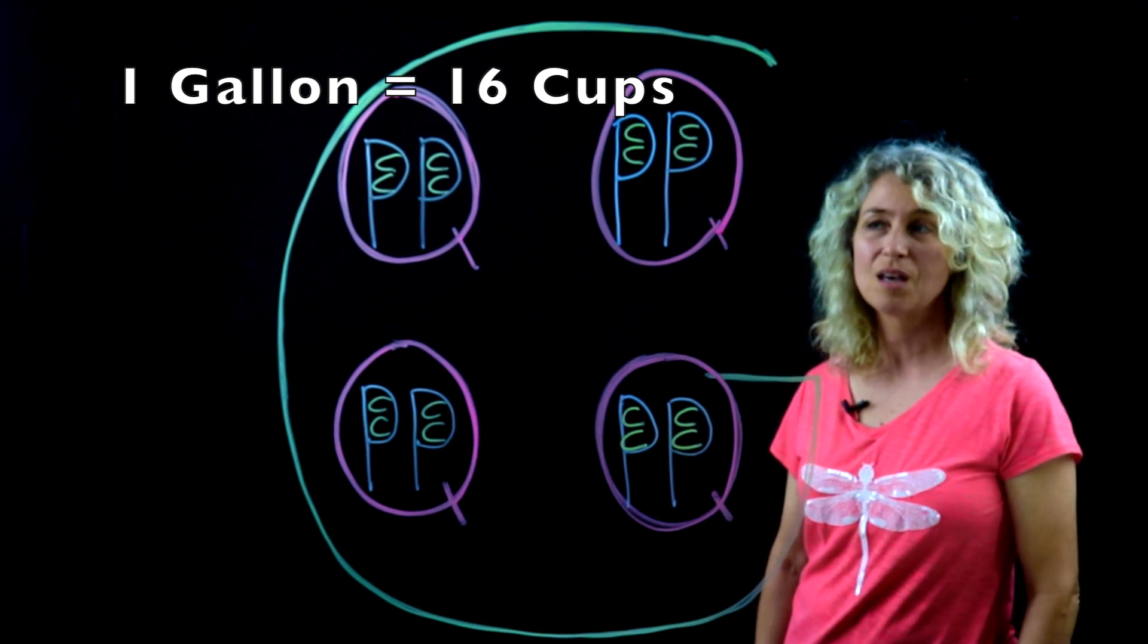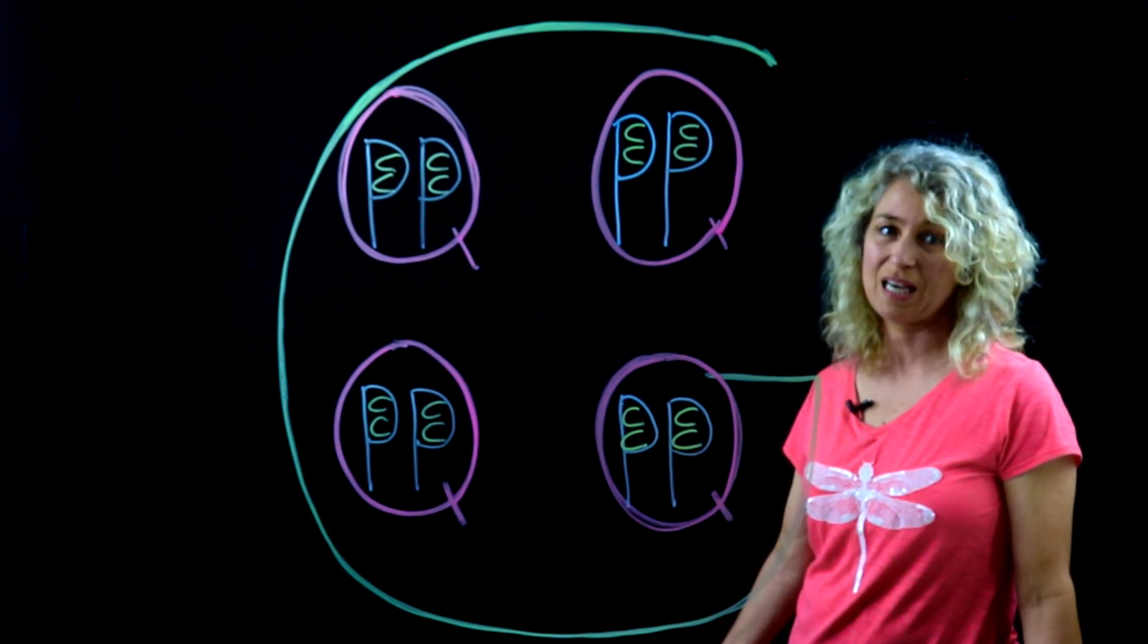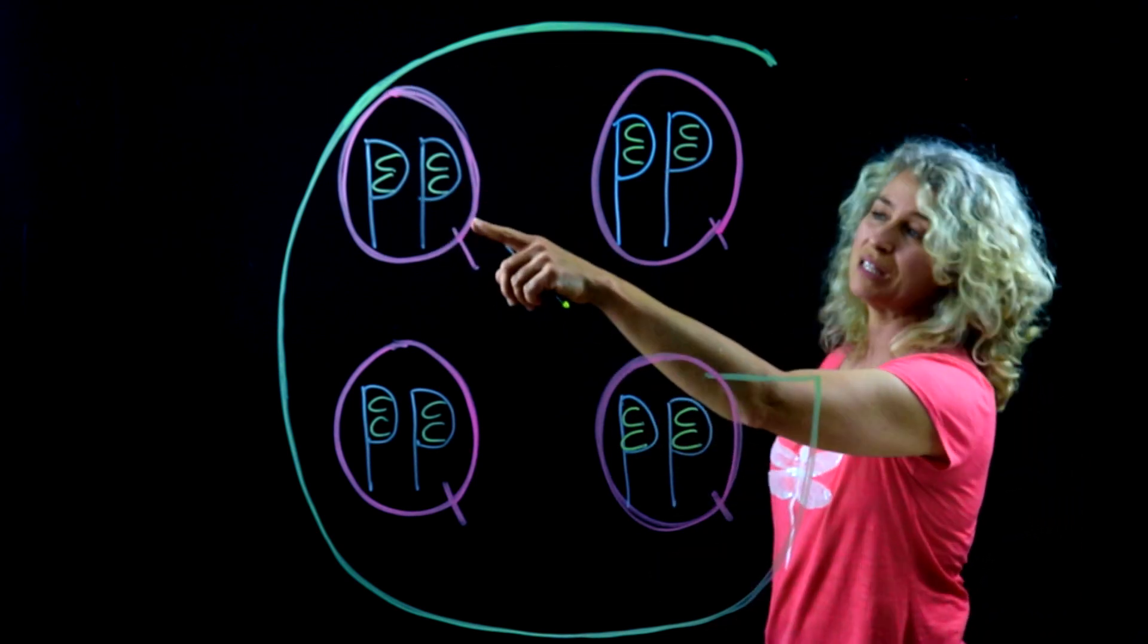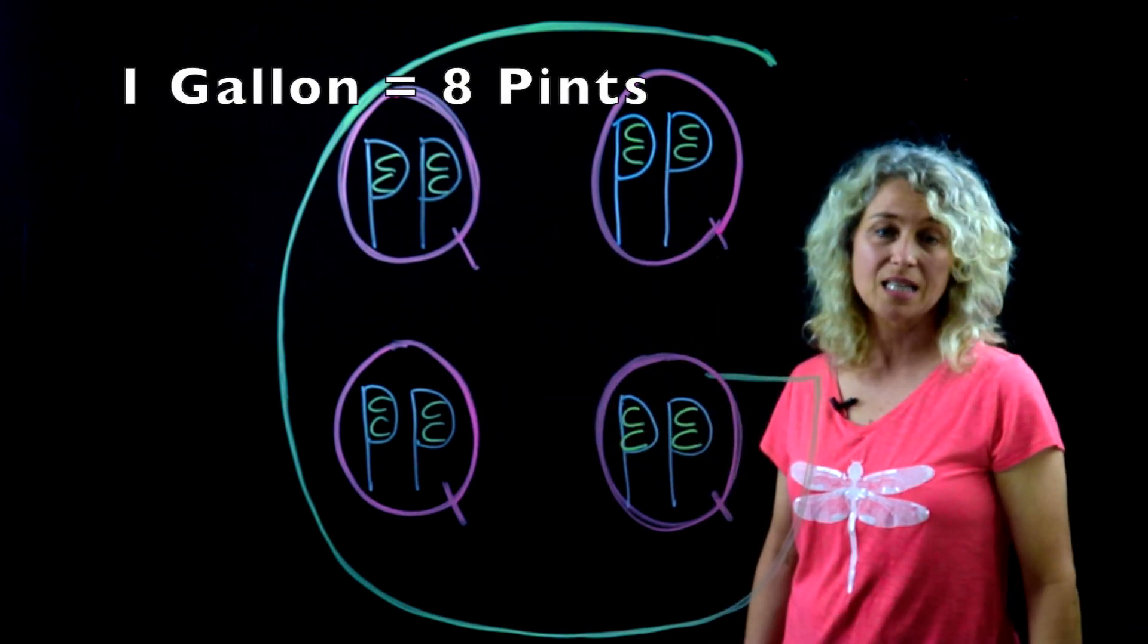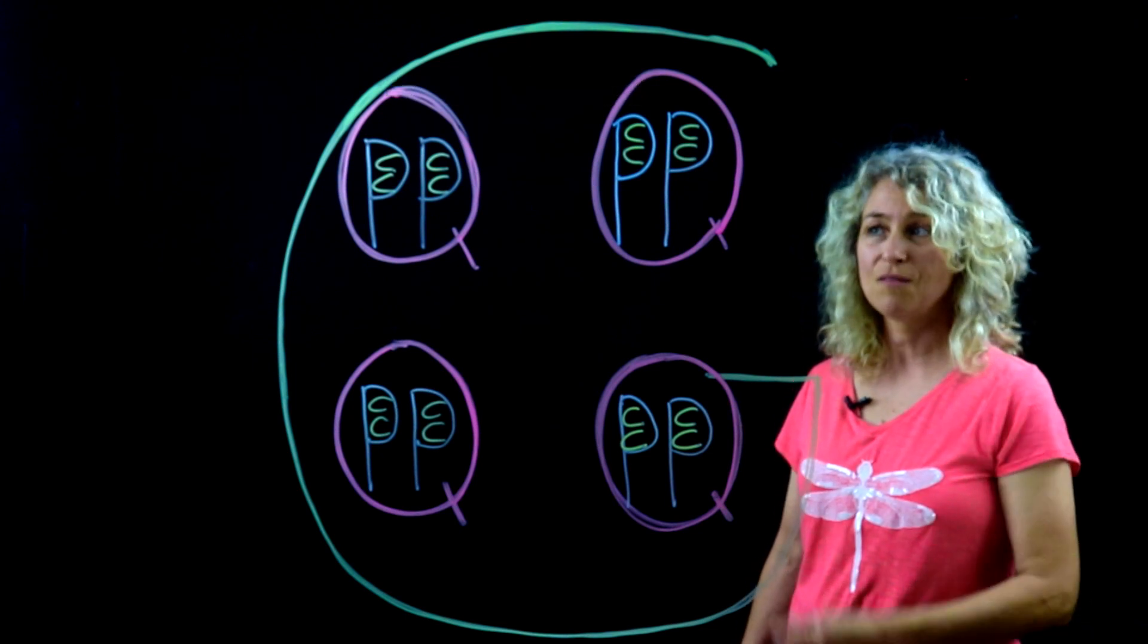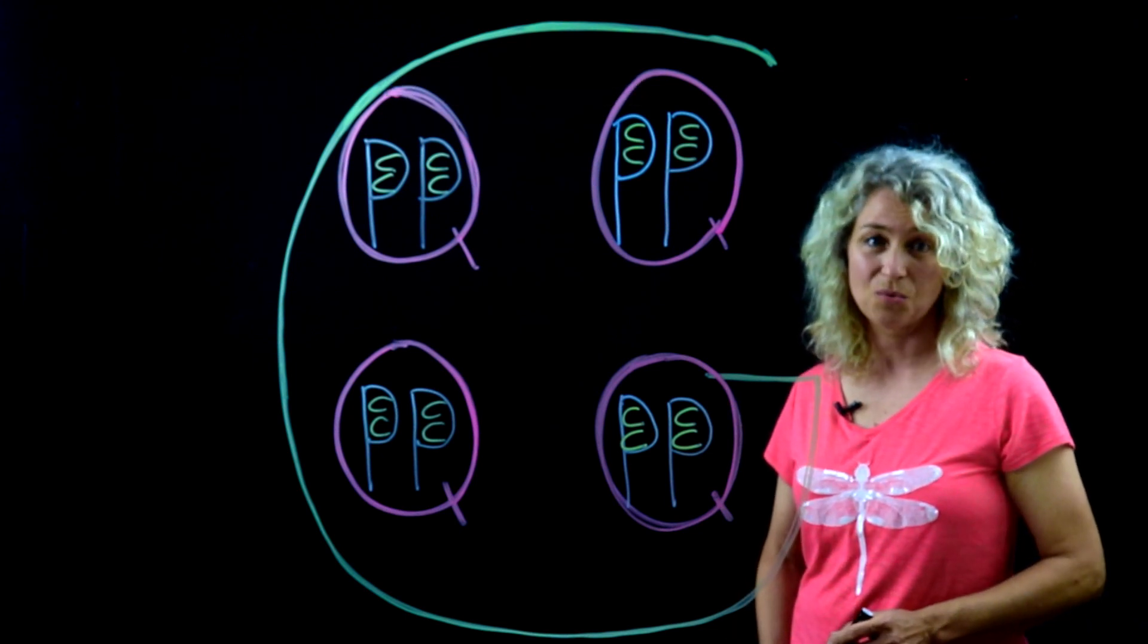If you're asked how many pints are in a gallon, how many P's are in the gallon? One, two, three, four, five, six, seven, eight. Eight pints in a gallon. It's a lot to keep up with, but if you use the memory device, it will really help you.